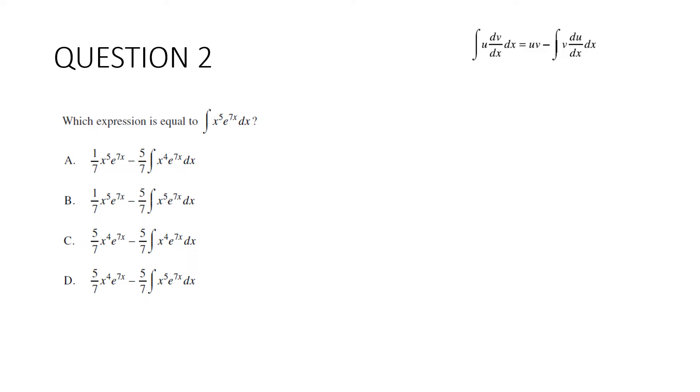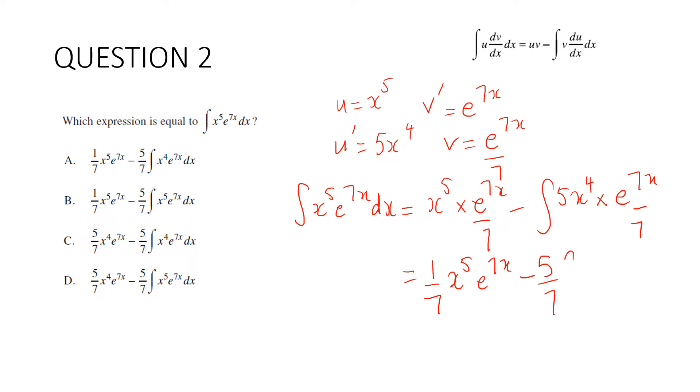Question 2. Which expression is equal to the integral of x to the power of 5 e to the 7x dx? We're going to use integration by parts. We're going to let u equal x to the power of 5 and v dashed equal e to the 7x. u dashed is equal to 5x to the power of 4 and v is equal to e to the 7x divided by 7. So our integral is going to be equal to u times v take away the integral of u dashed times v. We'll just tidy that up. And we can see d. I lost the dx there. But the answer is going to be A.